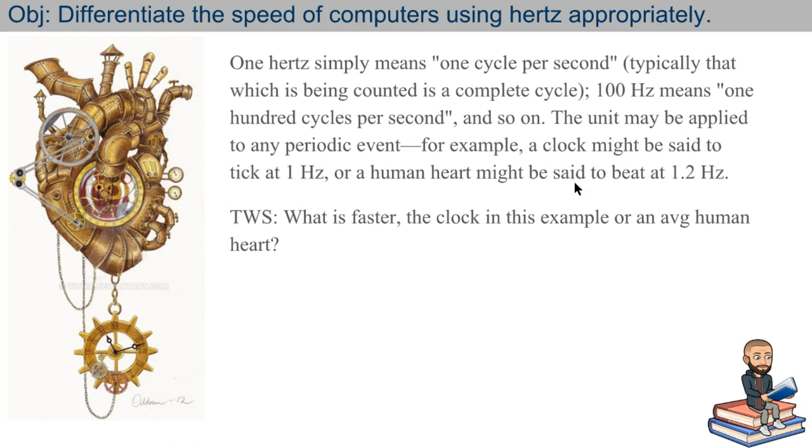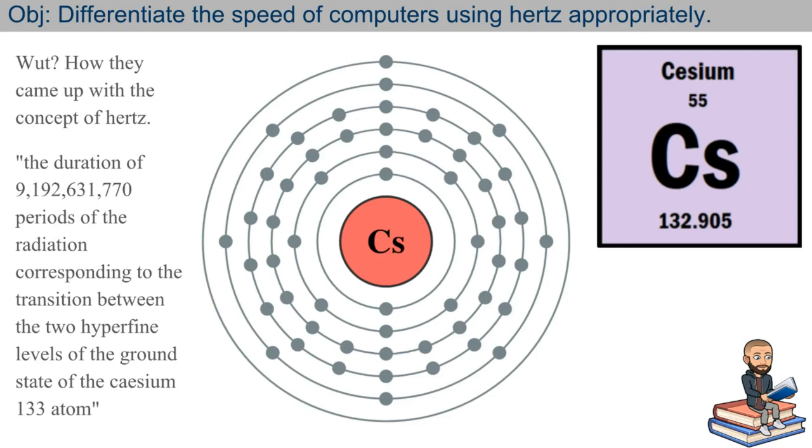Let me just wrap up this slide by saying that 100 hertz would mean basically 100 cycles per second. This unit can be applied to any periodic event. So for example, a clock might be said to tick at 1 hertz or even a human heart. It could even say it beats on average 1.2 hertz. You don't have to say 1.2 hertz per second because the second, like I was talking about with the cesium atom, second is an agreed upon concept when we're talking hertz.